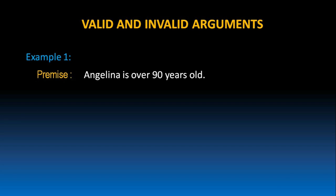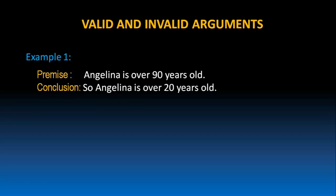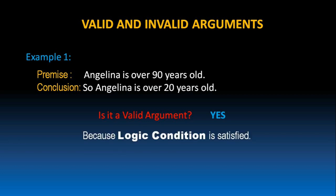Angelina is over 90 years old. So Angelina is over 20 years old. Is it a valid argument? Yes, of course it is a valid argument because the logic condition is satisfied. The conclusion can be inferred from the given premise. When the premise says Angelina is over 90 years old, it can be concluded she is over 20 years old. That's why we say the logic condition is satisfied, and the argument can be treated as a valid argument.